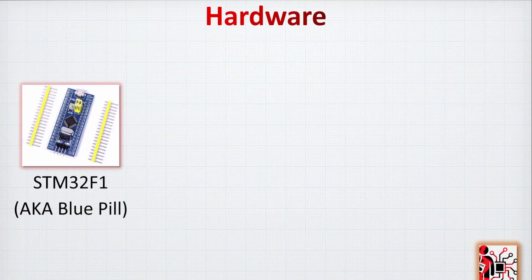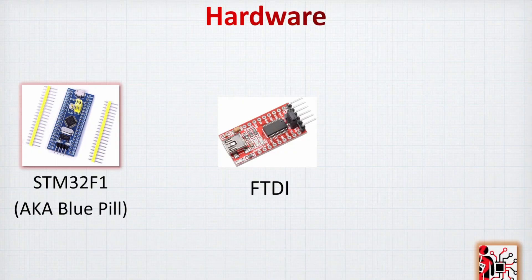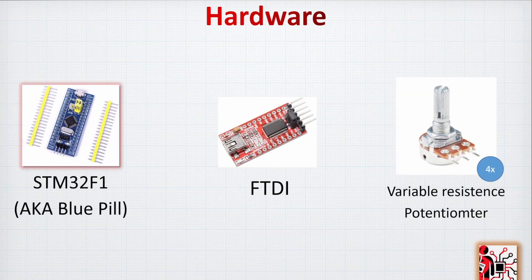From a hardware perspective, I'll be using the STM32F1, as we've created a whole tutorial series about many of its peripherals — it's a great example to show how it interacts with Python. I'll need an FTDI to interface with the PC. If you have an Arduino, you won't need an FTDI because it's already integrated on the board. Finally, I'll need some potentiometers as inputs so we can play with the data and see what's going on.